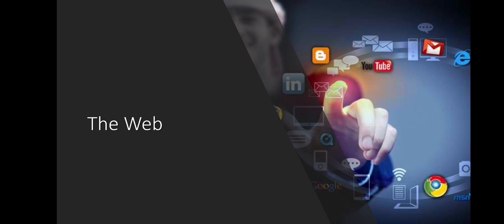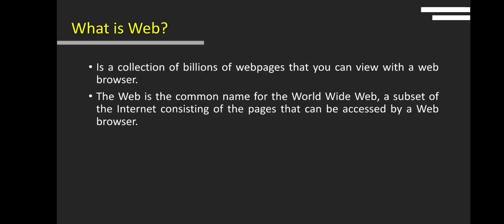Let us first define Web. The Web, also known as the World Wide Web, is a subset of the Internet that consists of pages that can be accessed using a web browser. Many people confuse the Web and the Internet and use the terms interchangeably. However, the term Internet actually refers to the global network of servers that enables information sharing via the Web.